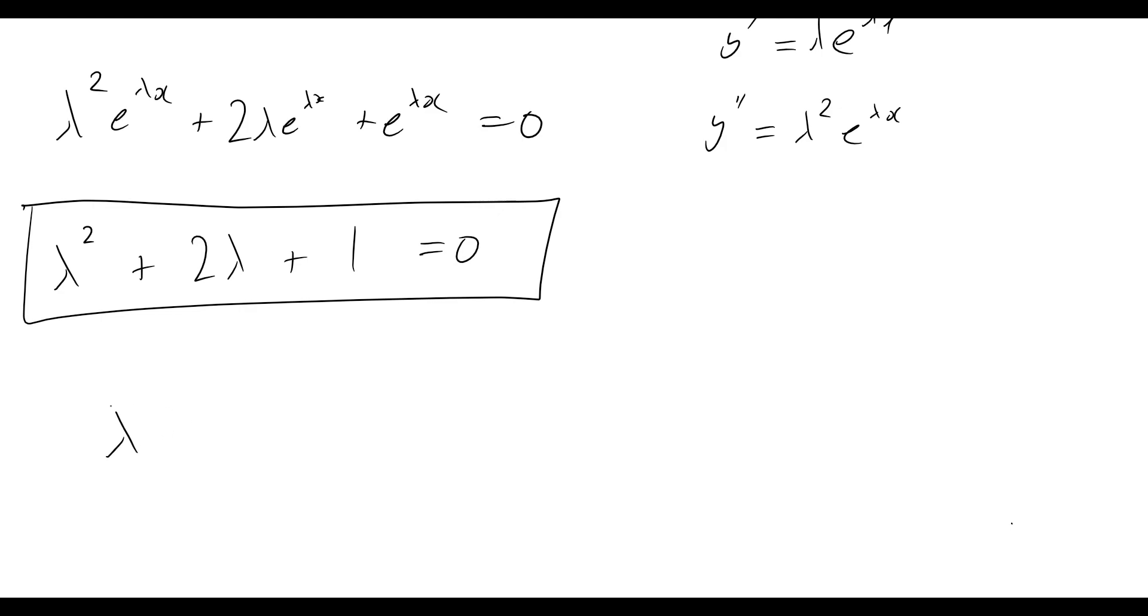So let's quickly factorize this and see what we get. So factorizing this, we'll get that lambda plus 1 all squared is equal to 0. And that is our solution there. So that means, well, we've got lambda equals negative 1 as our first solution. And then also lambda equals negative 1 as our second solution.